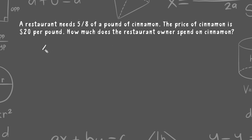The restaurant owner needs five-eighths of a pound of cinnamon. That is less than a pound, and because cinnamon costs twenty dollars for a pound, the restaurant owner is going to pay less than twenty dollars. Now if this were four-eighths of a pound, that would be exactly half, so they would be paying ten dollars. But it's a little bit more than half, so the owner is going to pay a little bit more than ten dollars altogether.